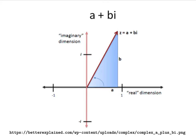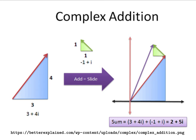We can also discuss addition of complex numbers. Because we view a complex number as a vector in R2, addition of complex numbers works the same as addition of vectors. For example, adding 3 plus 4i to negative 1 plus i: first we add along the x direction, 3 minus 1 equals 2, then along the y direction, 4 plus 1 equals 5. So the sum is 2 plus 5i.